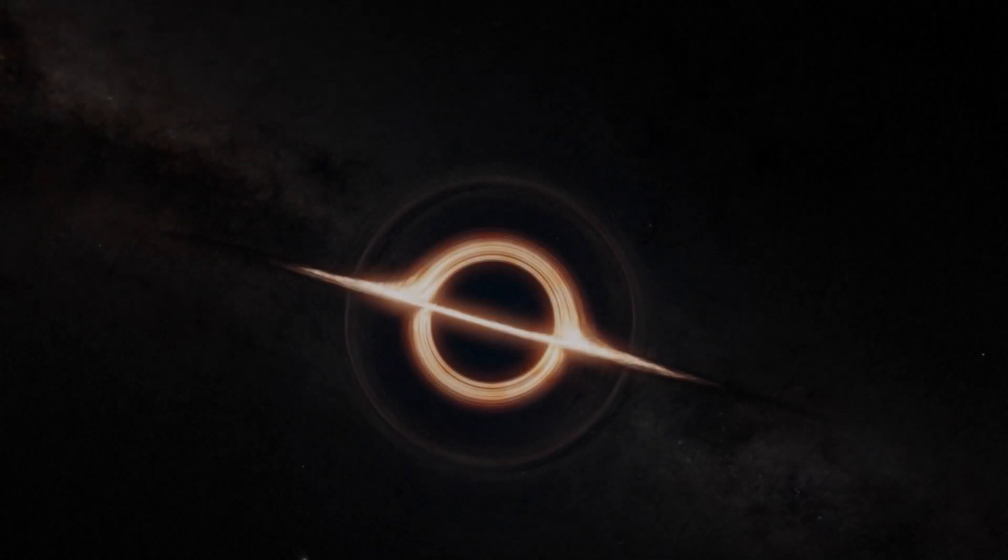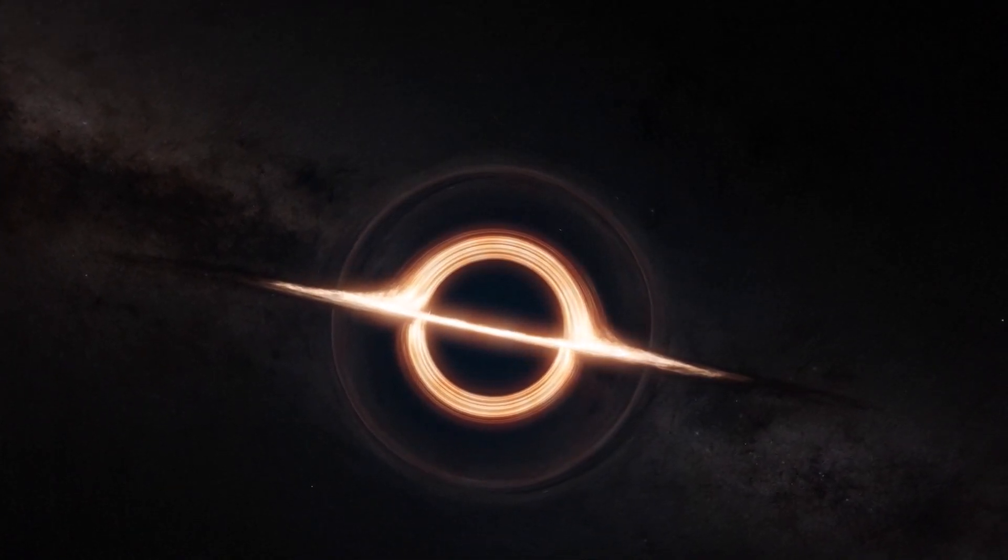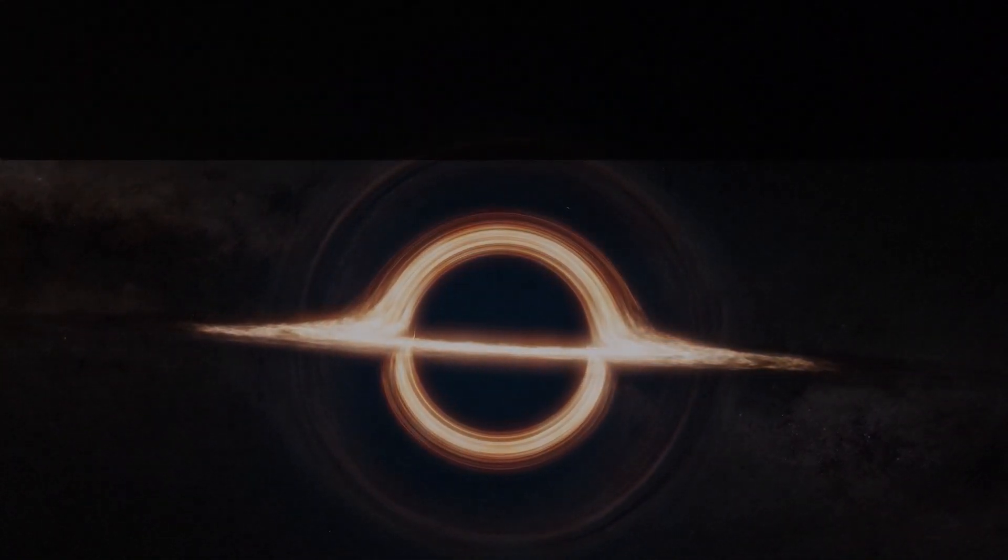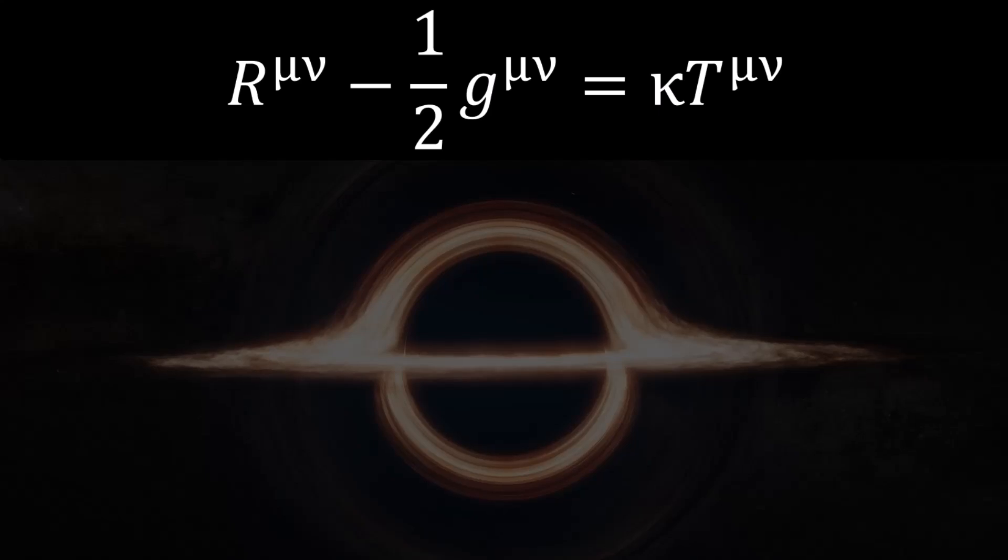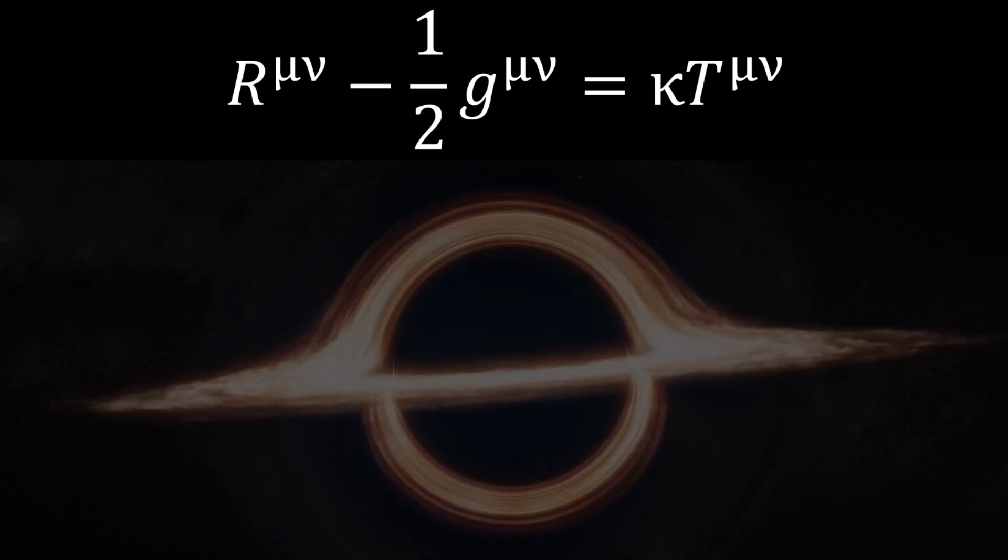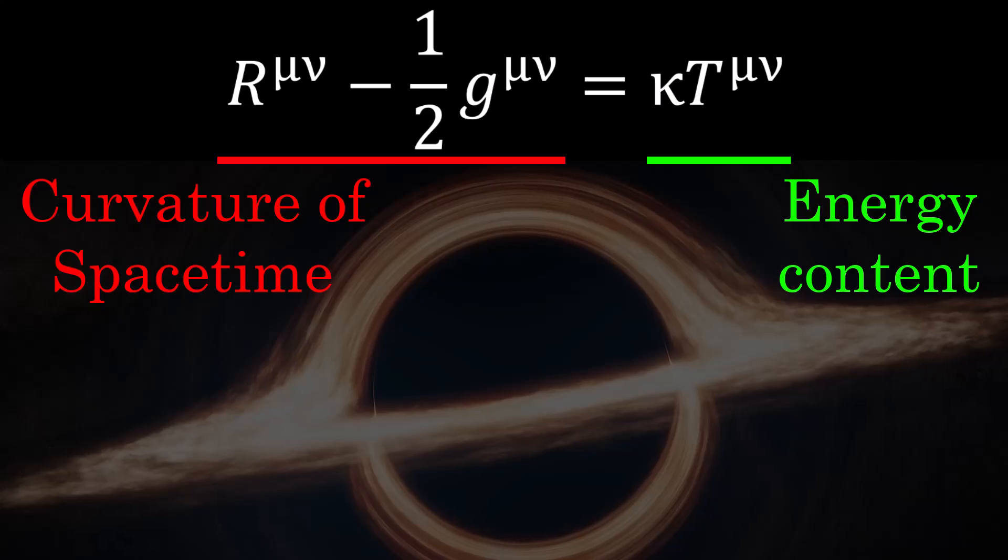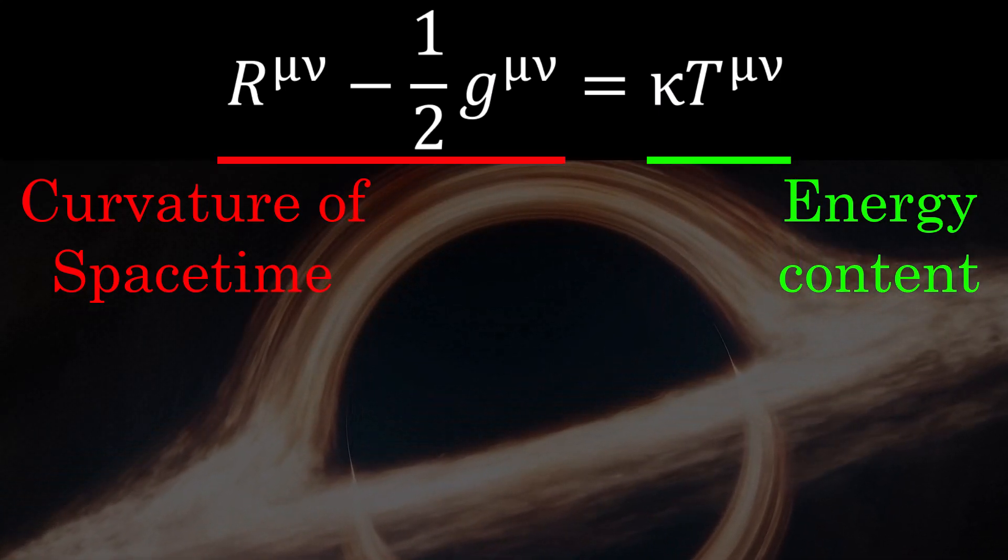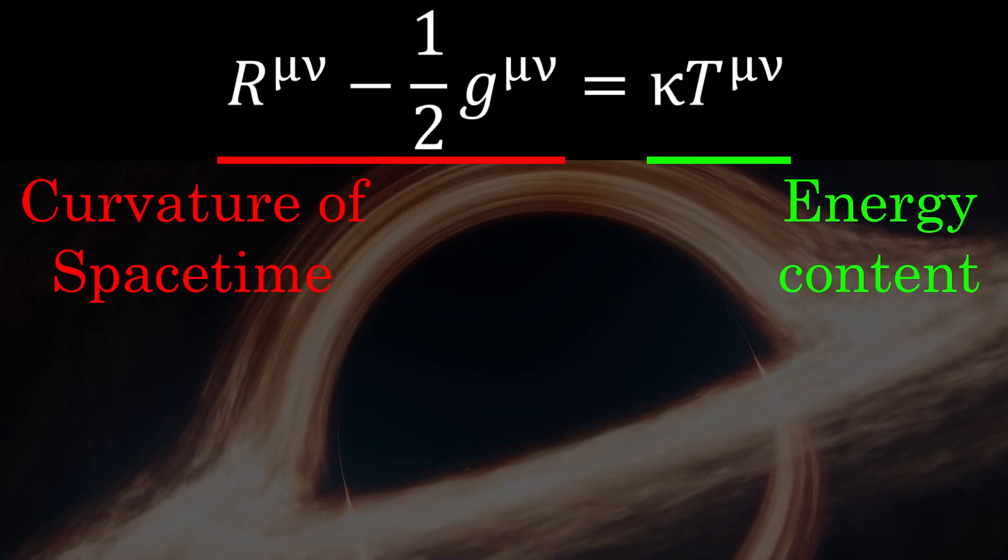General relativity is the most accurate theory we have for describing and understanding spacetime and gravity. At its heart are the Einstein equations, which can be simply thought of as being one formulation of equating the curvature of spacetime to gravity, thus describing gravity as the bending of both space and time around mass, or more accurately energy, instead of as a classical force.